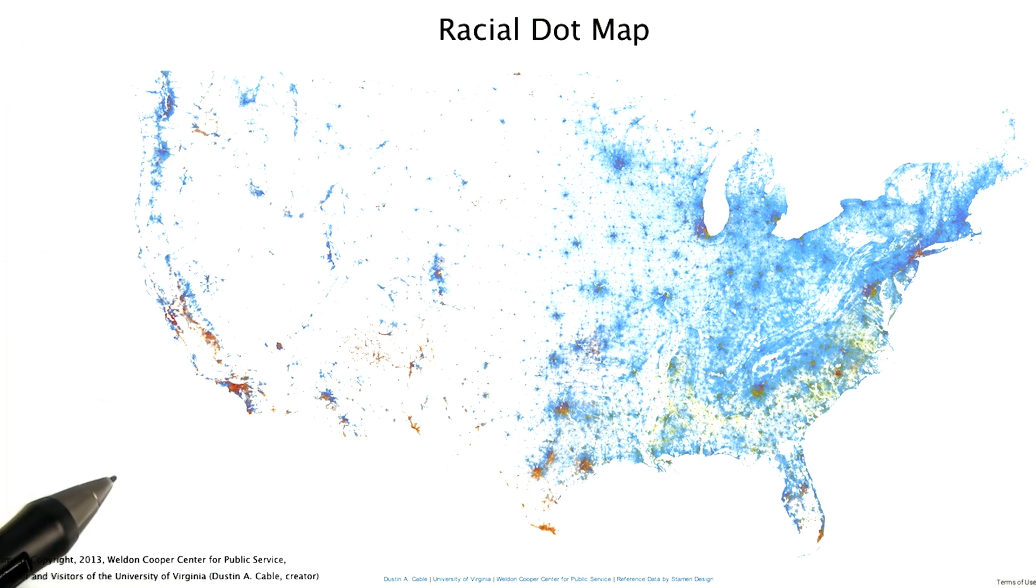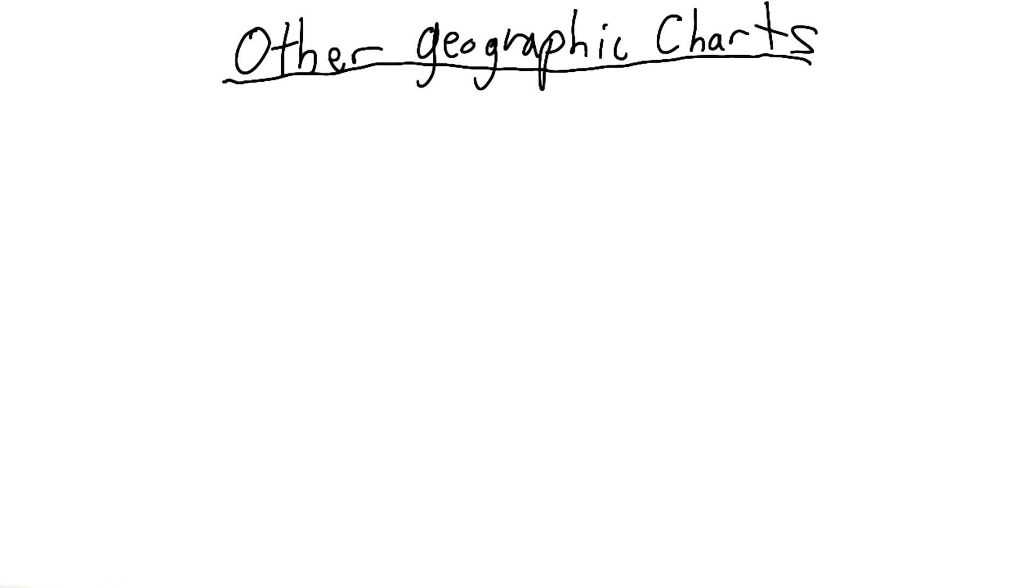The map we have drawn here only uses two visual encodings, the x and y coordinate for position, and one visual encoding, the color, for the race. There are just a few other geographic charts that I wanted to talk about.